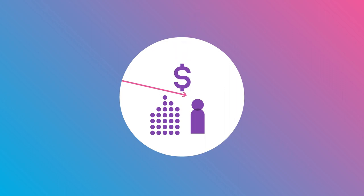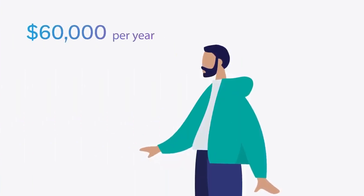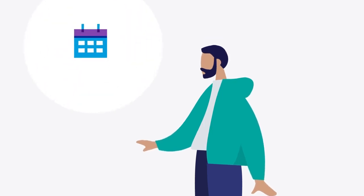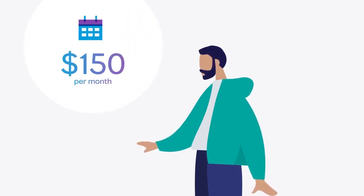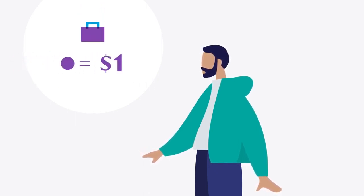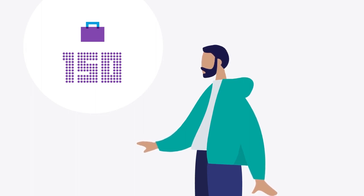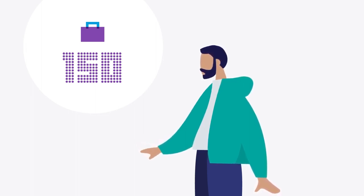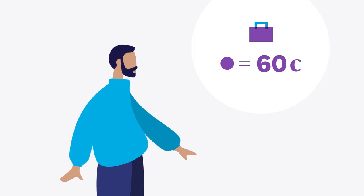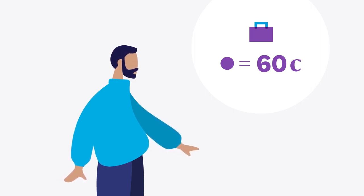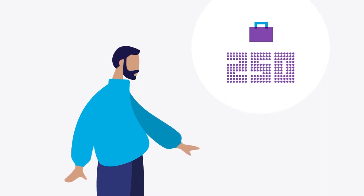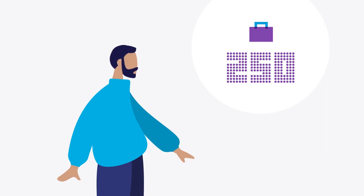Let's look at an example. Alex is paid sixty thousand dollars a year. Each month three percent of his salary, or one hundred and fifty dollars per month, is paid into his investment account. At the time Alex makes his first monthly contribution, a unit in his chosen investment option is worth one dollar. His contribution of one hundred and fifty dollars purchases one hundred and fifty units. When Alex makes his contribution for another month the price of units falls to sixty cents. For the same contribution of one hundred and fifty dollars, Alex's contribution now purchases two hundred and fifty units.